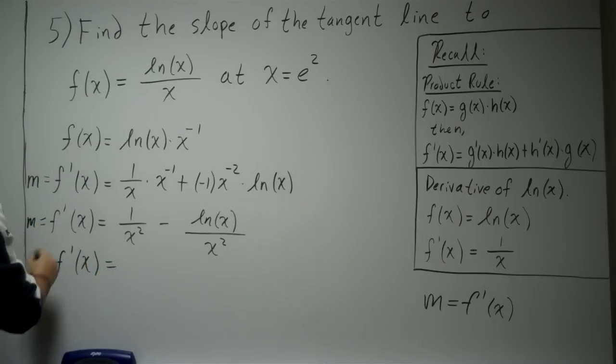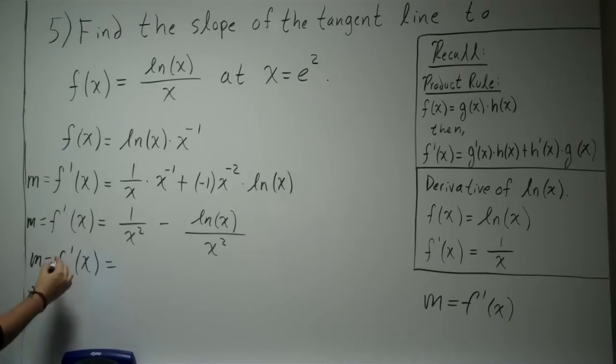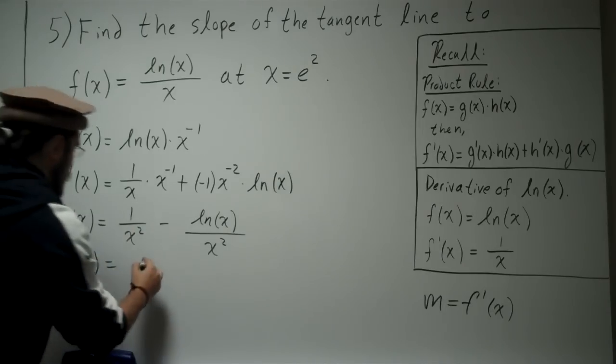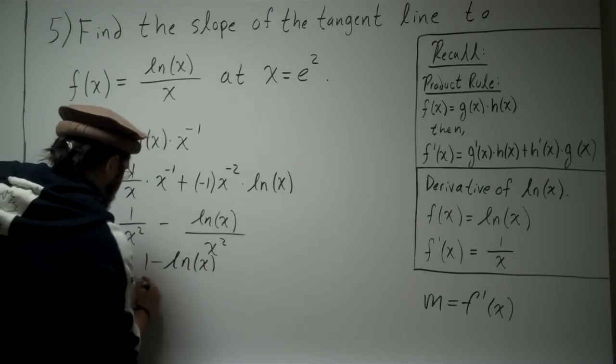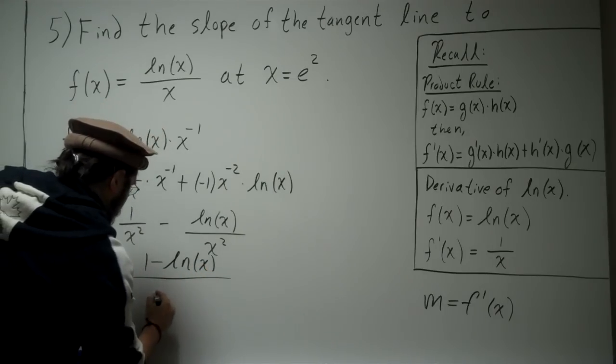This is m, and this is m. Okay? So go ahead and combine that. It's 1 minus ln(x), divided by x squared.